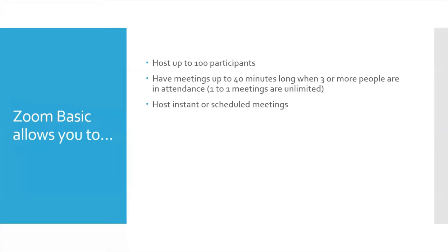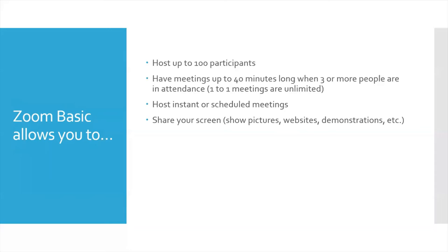You can host instant or scheduled meetings. So you can either on the fly say, I want to start a meeting right now and then invite people, or you can schedule a meeting to start at a certain time and invite people so they know, for example, at 12 o'clock today so-and-so is having a Zoom meeting. With Zoom Basic, you can share your screen — so that means you can do things like show pictures, show websites, show demonstrations. If you're showing somebody how to use something, maybe like a Microsoft Office program, you can show them an on-screen demonstration using the share screen feature.